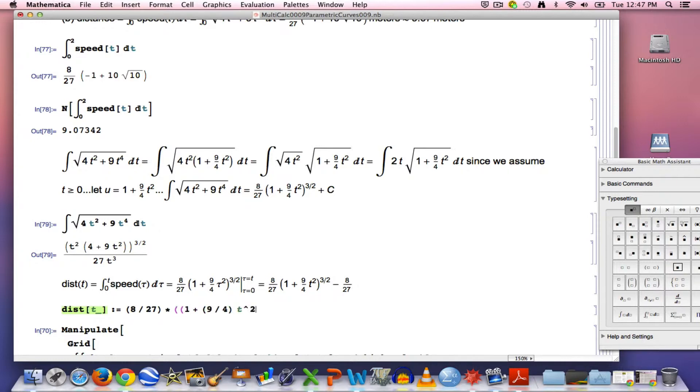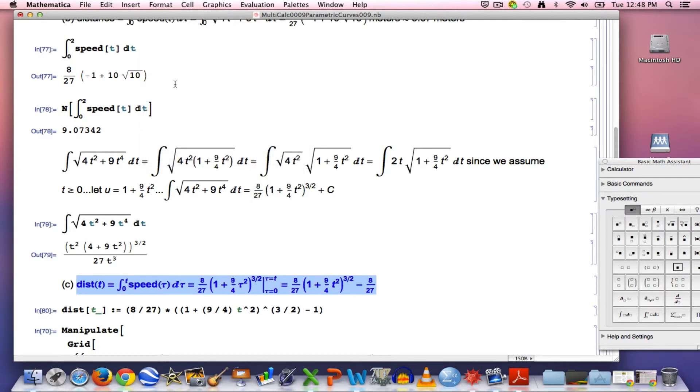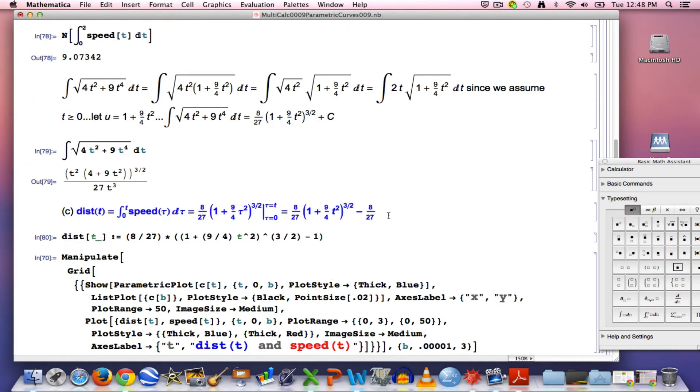You could factor the 8/27 out of this, but you don't have to. I'm going to enter this function. I guess I will factor the 8/27 out when I enter it. I'm entering the formula for the distance traveled. This again is the answer for the distance traveled as a function of time. This is really part c. The answer to part B again was this specific amount here. That many meters. This is in meters, by the way. Enter that function into Mathematica. Now we're ready to watch the animation.